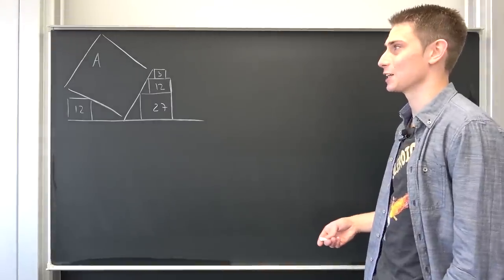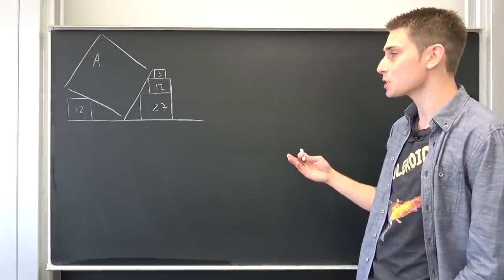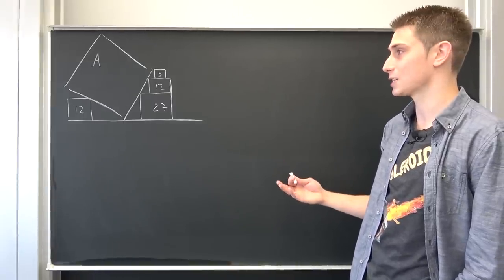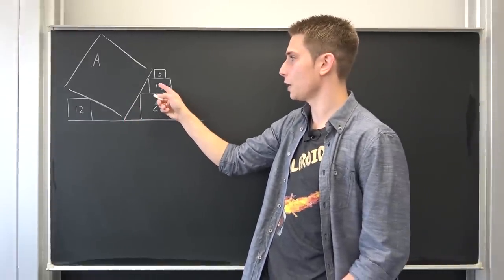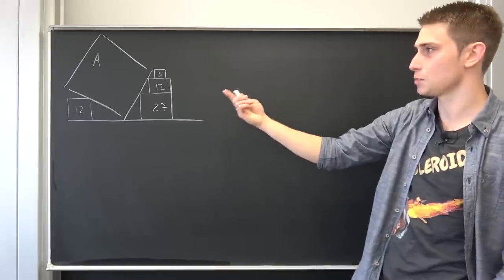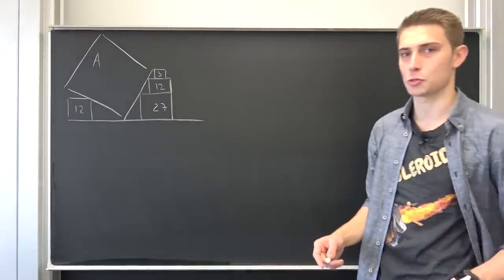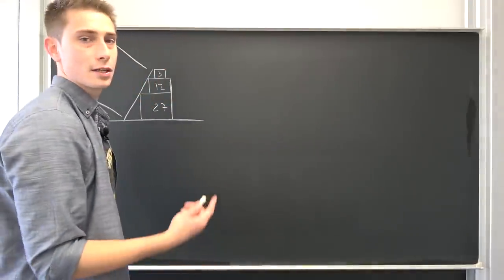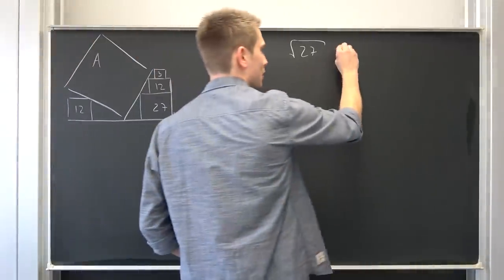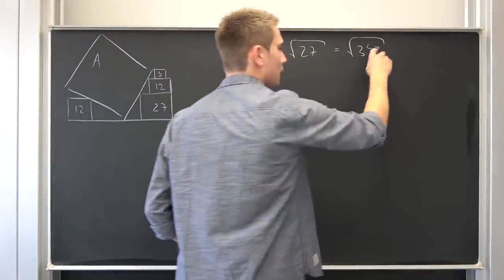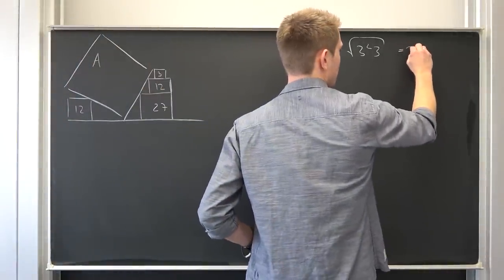We are going to solve it analytically, because if there's geometry on this channel then it's probably analytic geometry. So the first thing I found really important in solving this problem is to factor the side lengths a little bit. Those are all areas — we want to find out the area of this big square. 27 is the area of this one, meaning one side length is √27. The prime factorization of 27 is 3³ = 3² × 3, so √27 = 3√3.